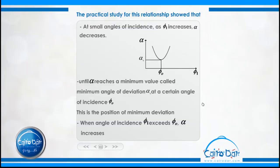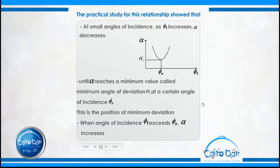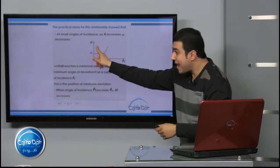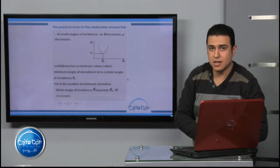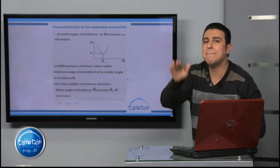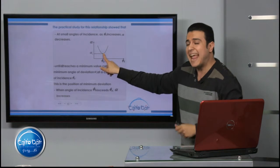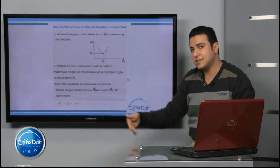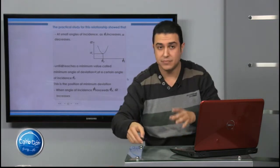Alpha reaches its minimum deviation value, symbolized as α₀, at a certain angle of incidence called φ₀. After that, when the angle of incidence continues to increase, the angle of deviation also increases. This graph is very important.